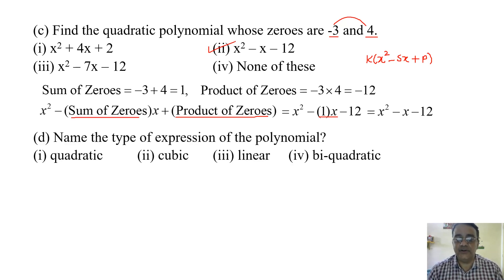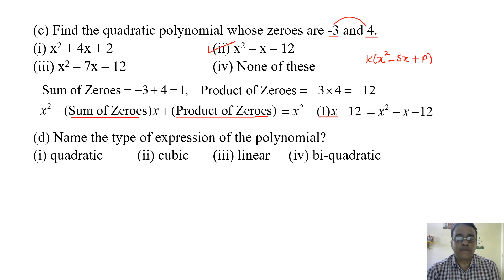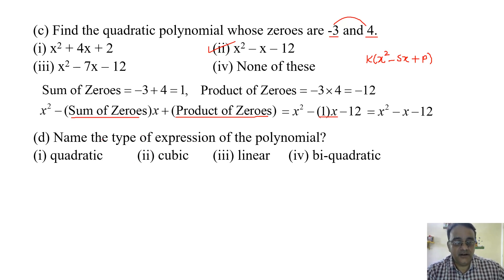Question four: Name the type of expression of the polynomial — quadratic, cubic, or linear. There are three zeros, so the expression given in the graph is a cubic polynomial.